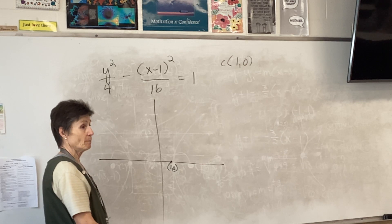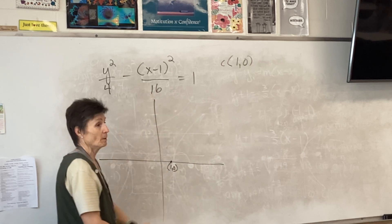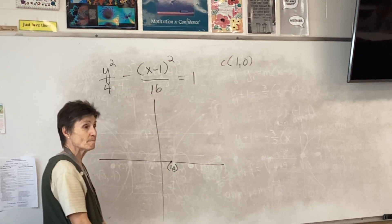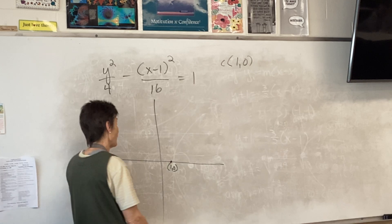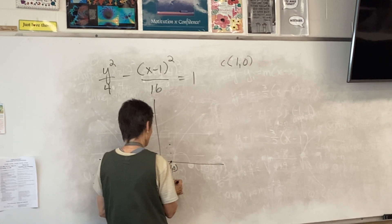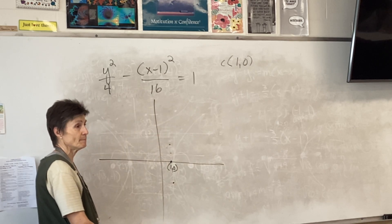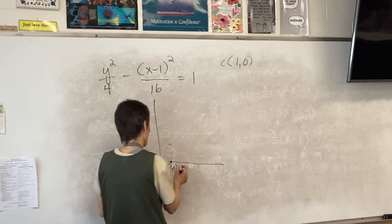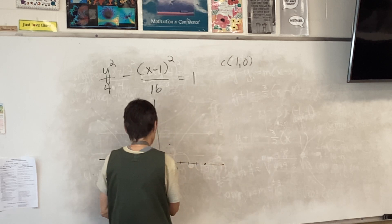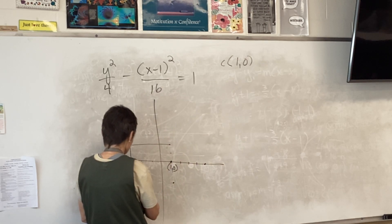Now I'm going to build my box. What does that four tell me? Two up and down — one, two, one, two. And what does the 16 tell me? Square root is four — one, two, three, four, one, two, three, four. And there's my box.